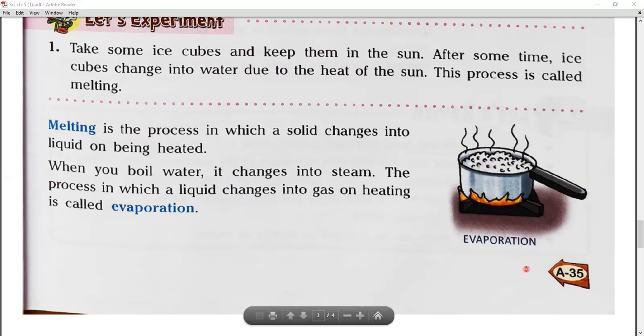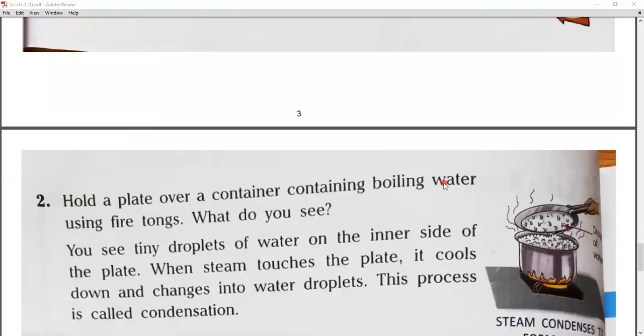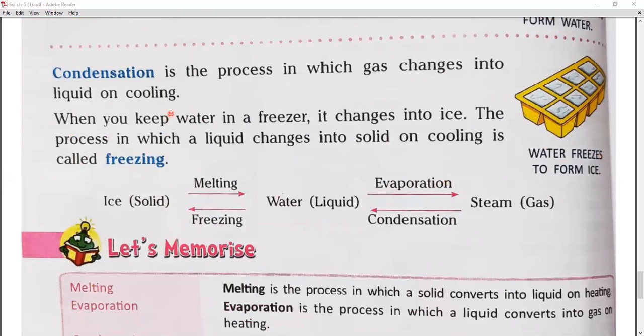Change of form where liquid changes into gas is known as evaporation. After that we have another term, condensation. What is condensation? When a gas changes into liquid, first we have changed from solid to liquid through melting, and then we change through evaporation.